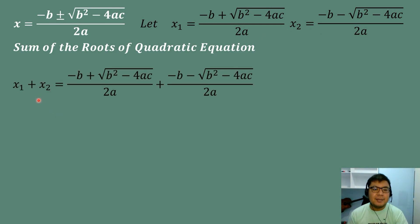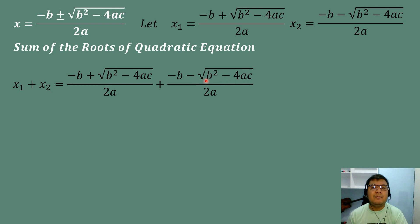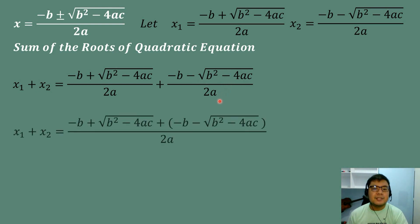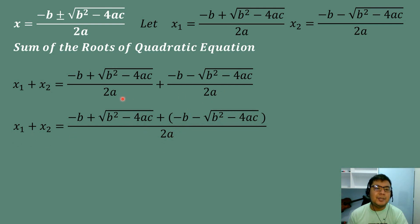So we have X₁ plus X₂, the sum of the two roots. We will substitute X₁ which is equal to negative B plus square root of B squared minus 4AC all over 2A, plus negative B minus square root of B squared minus 4AC all over 2A for our second root. Since they have the same denominator, this is an example of similar fractions, so we just add the numerators.